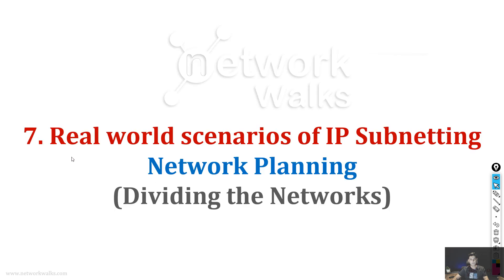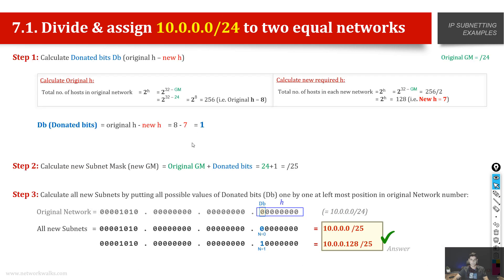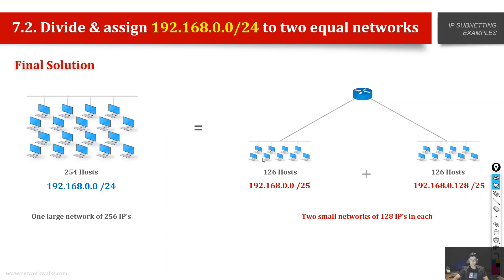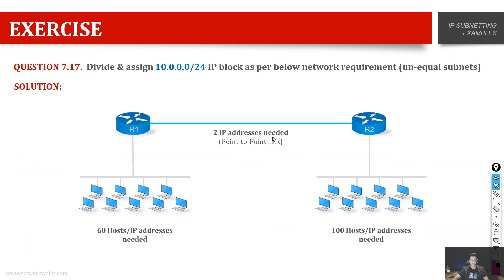The last topic will be about real-world scenarios of IP subnetting that we do day to day while working at Vodafone, MTN, British Telecom, Etisalat, or any network in a day-to-day IP planning department. We will see how to divide and assign a network into two equal subnets — for example, 126 hosts each — step by step, with lots of exercises and some exercises for you to do yourself without solutions.